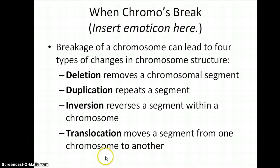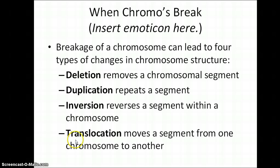Inversion refers to circumstances in which a portion of a chromosome is broken off, reverses its position, and then gets reattached — enzymes will reattach it to the original chromosome. Translocation is somewhat like this deletion-duplication scenario where a portion of a chromosome is broken off, but that segment actually moves to a non-homologous chromosome.